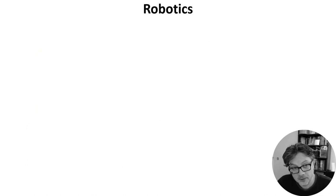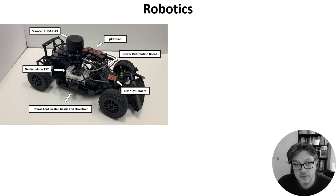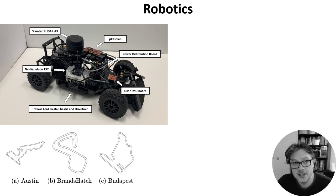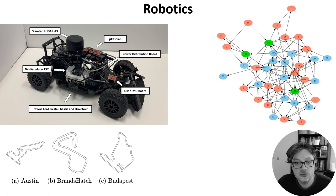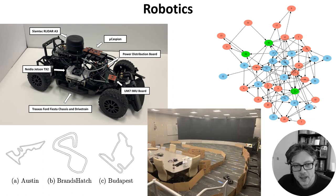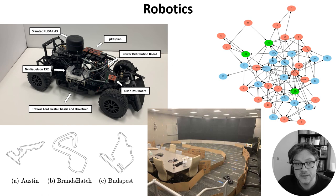I'm going to finish this week with one nice robotics application from Katie Schumann. She used a robotic car controlled with a MuCaspian neuromorphic computing device. It was trained on a simulator of miniaturized Formula 1 tracks like these, and she used evolutionary algorithms, which find some surprisingly tiny networks that are able to do the task. Having trained it in a simulated environment, they tested it in a previously unseen real-world environment, and it was able to drive around the course.